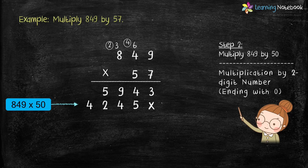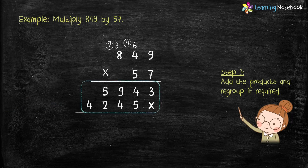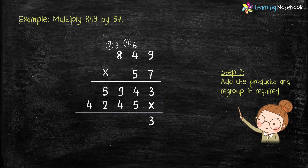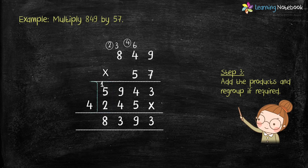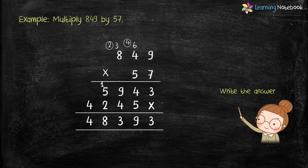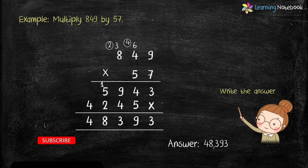Now in step 3, we will add these two products to get the answer. 3 plus 0 equals 3, 4 plus 5 equals 9, 9 plus 4 equals 13 — carry 1 and write 3 in the answer. Next, 1 carry plus 5 plus 2 equals 8, and then there is 4. So we have got the answer as 48393.